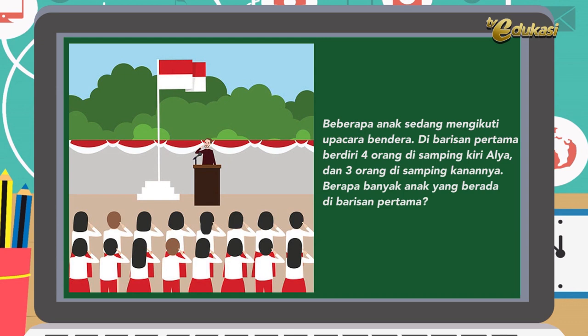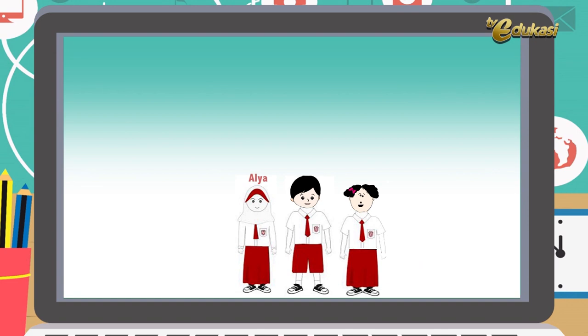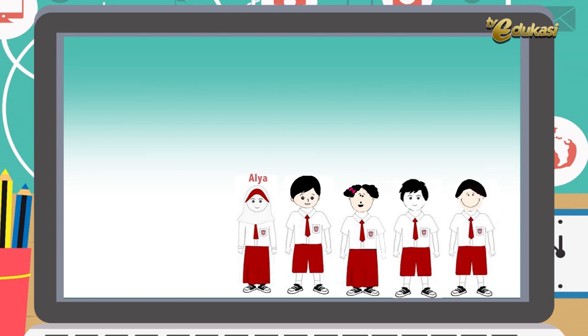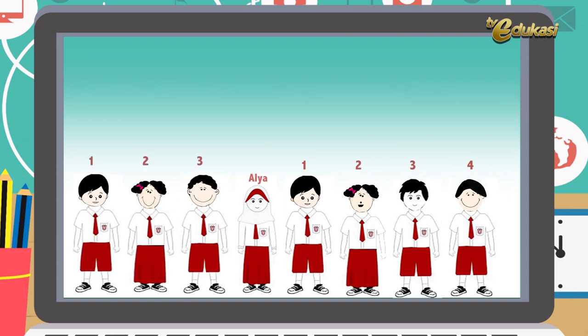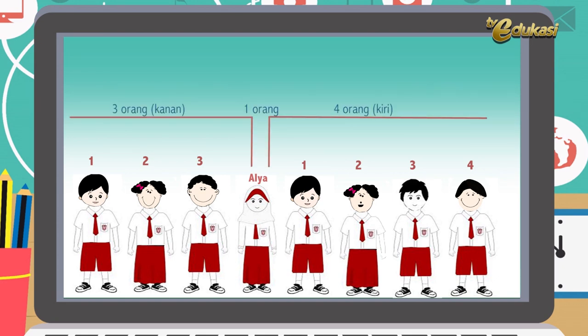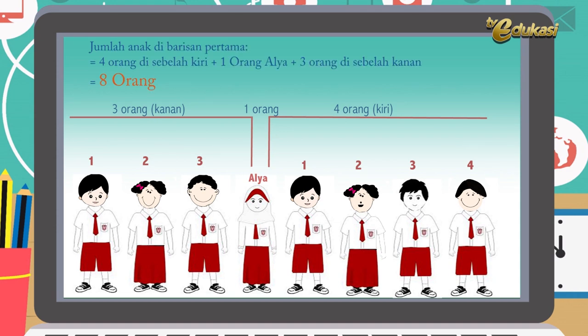Kalau bingung, Bapak akan terangkan caranya. Perhatikan solusinya. Di sini 4 orang di samping kiri Alia, berarti Alia 1 orang. 3 orang di samping kanan Alia. Jumlah anak di barisan pertama sama dengan 4 orang di sebelah kiri, ditambah 1 orang itu Alia sendiri, dan 3 orang di sebelah kanan. Jadi banyak anak yang baris adalah 8 orang.